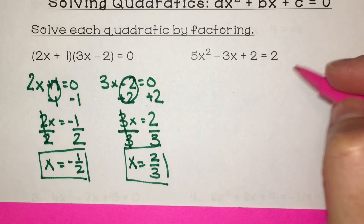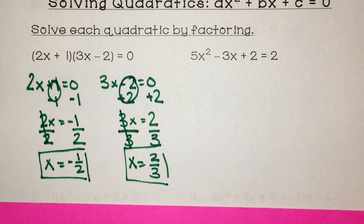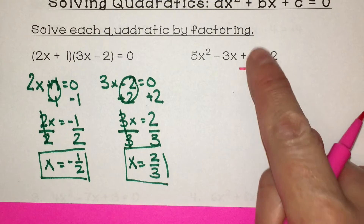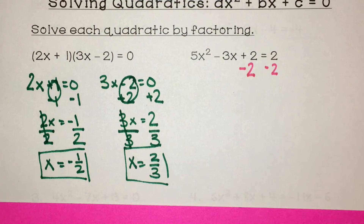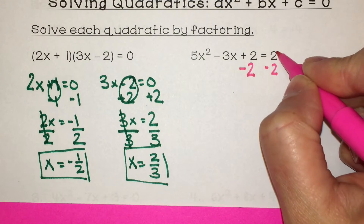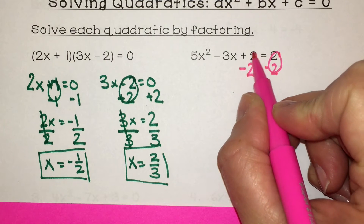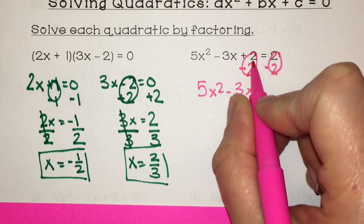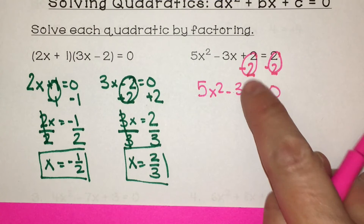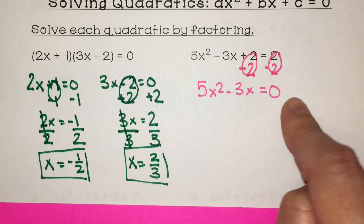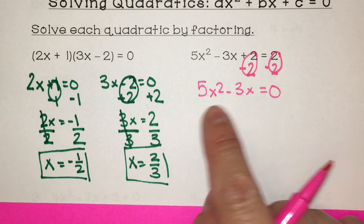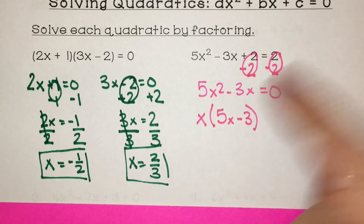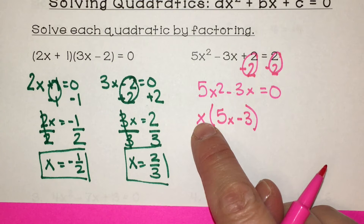On the second problem, it doesn't have 0 on the right side, so I need to move that positive 2 to the other side of the equal sign. The opposite operation is minus 2, but anything you do to one side you must do to the other. 2 minus 2 is 0, and on the right side 2 minus 2 is 0 as well, so the constant goes away. I'm left with 5x squared minus 3x equals 0. I can factor out an x from both terms, leaving 5x minus 3.